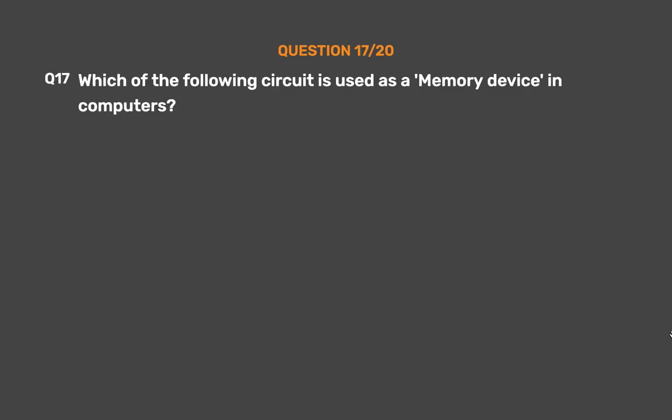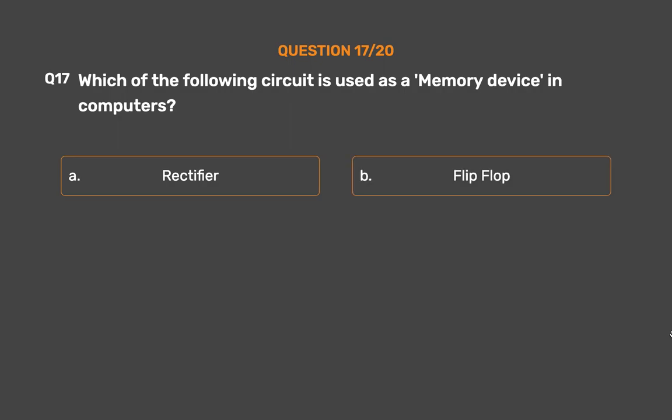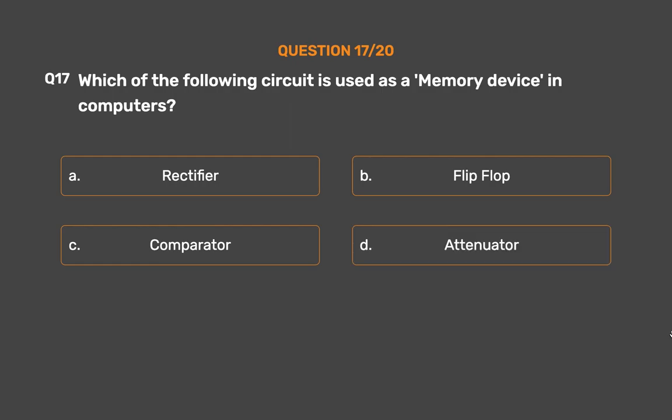Question number 17. Which of the following circuits is used as a memory device in computers? Option A: Rectifier. Option B: Flip-flop. Option C: Comparator. Option D: Attenuator.